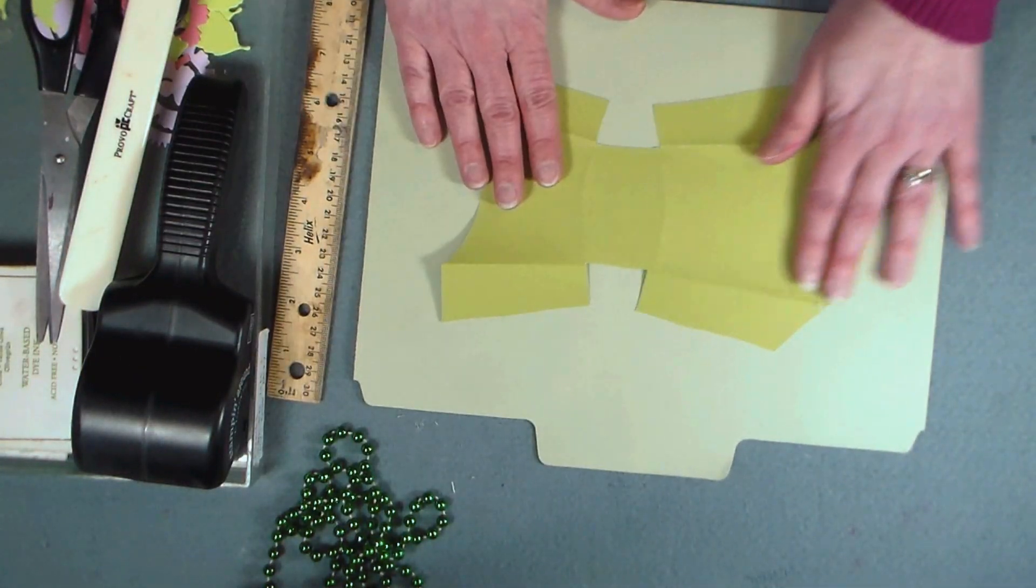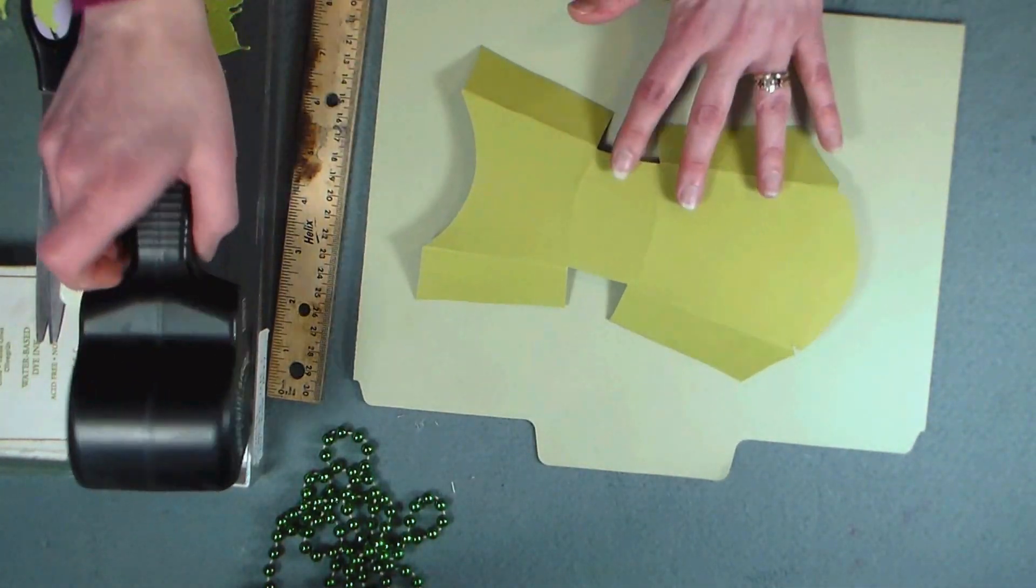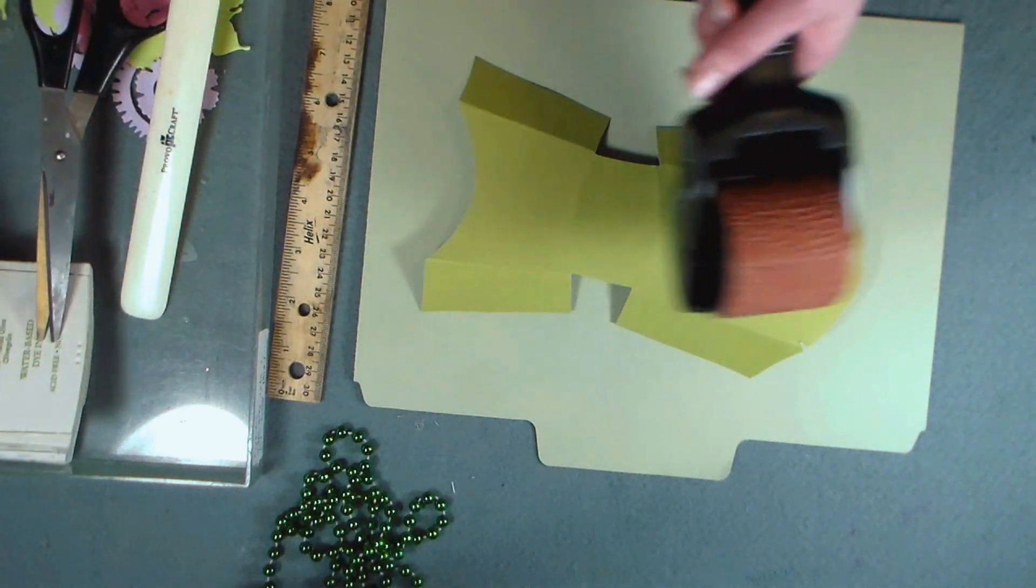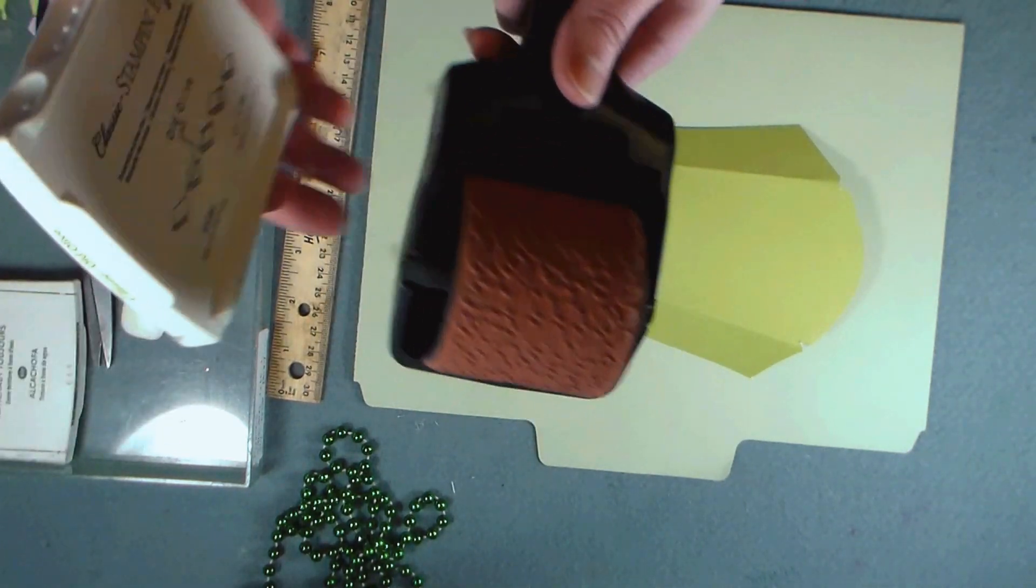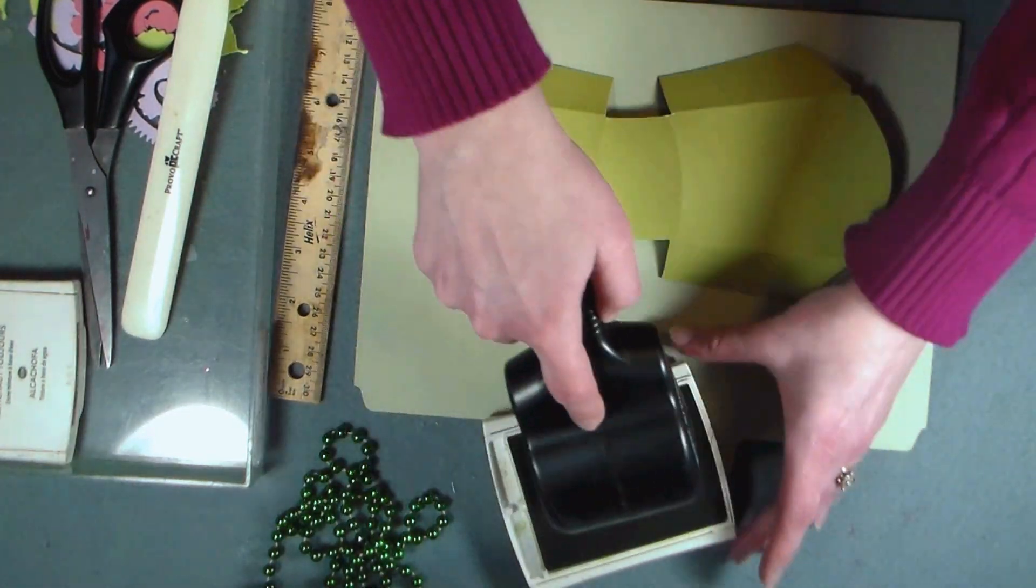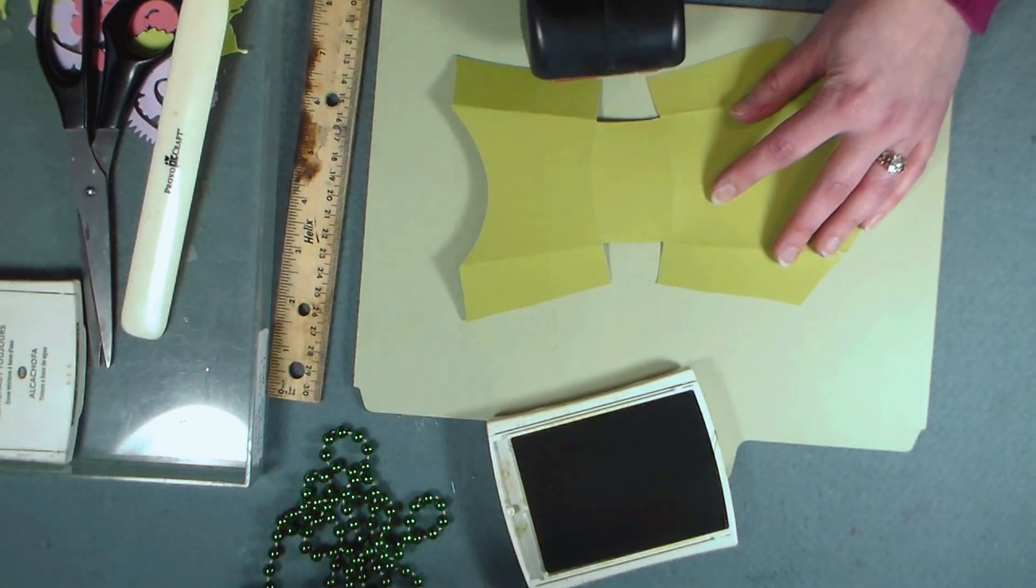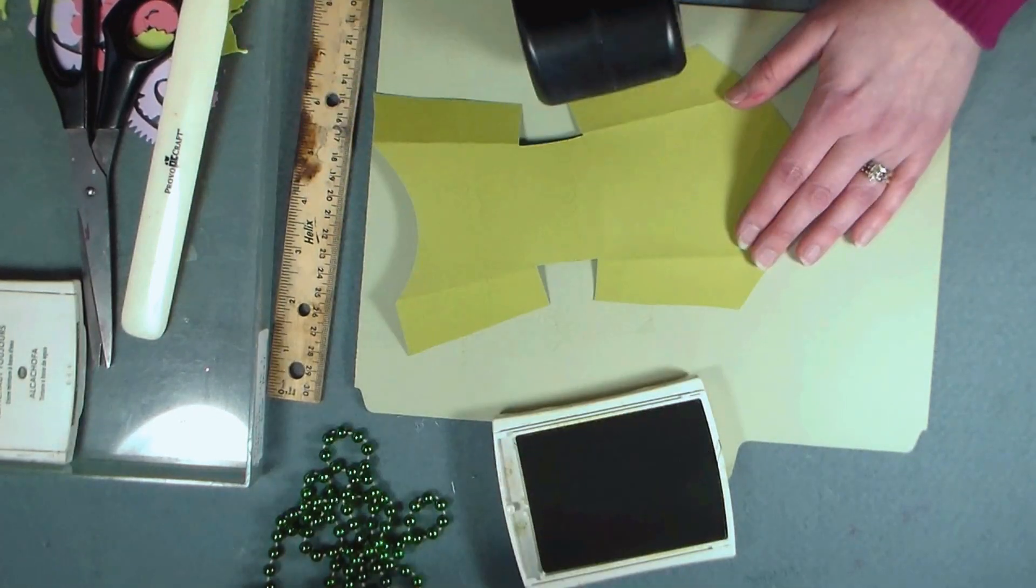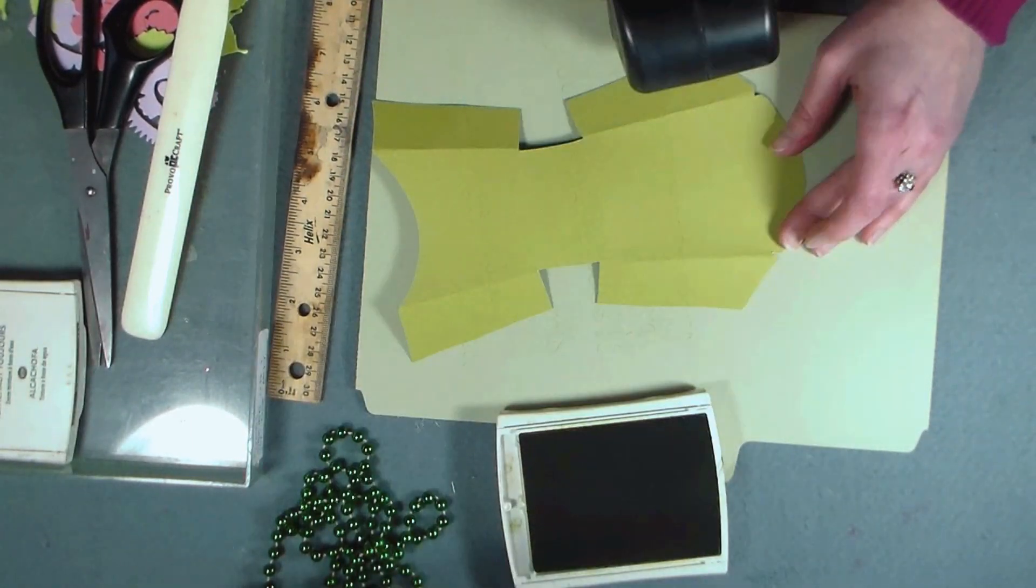I'm going to put this old folder on my work surface to protect it from ink and I'm using a roller stamp with a pretty lace pattern to add a little texture to my box. I'm using avocado colored ink and just a regular ink pad to ink up my roller stamp and then I'm simply going to roll the pattern onto the box.